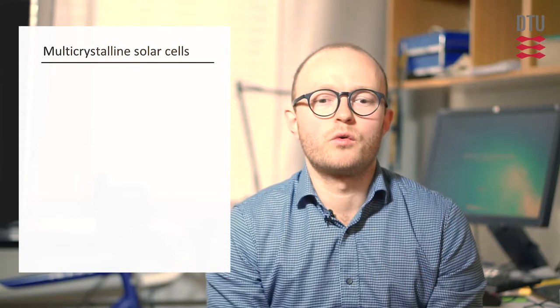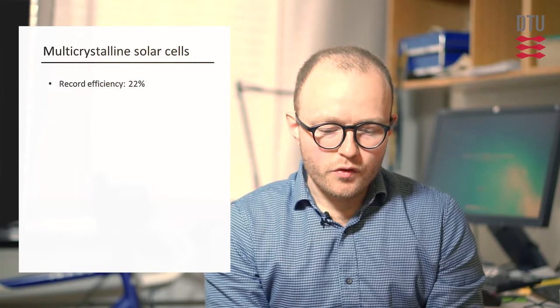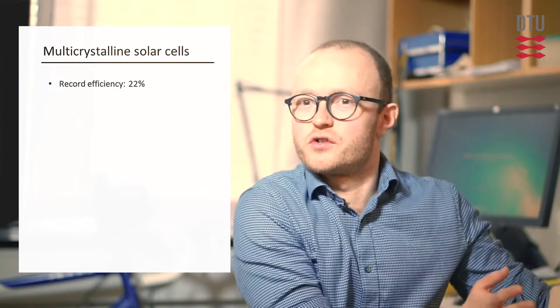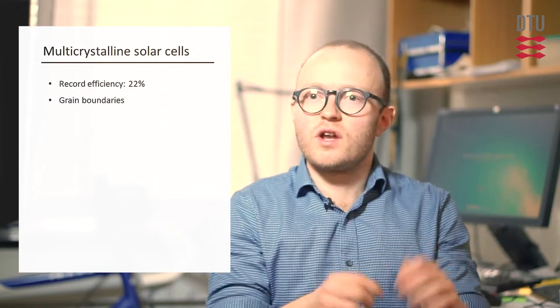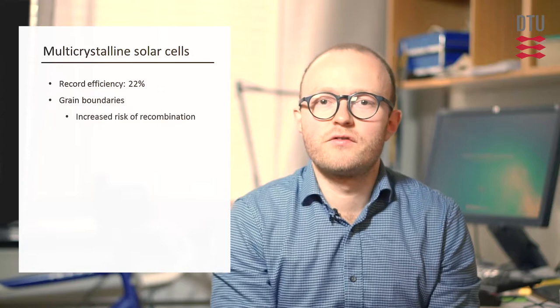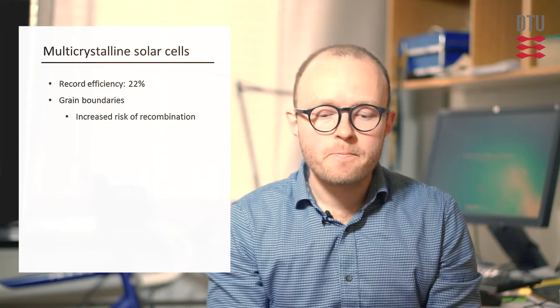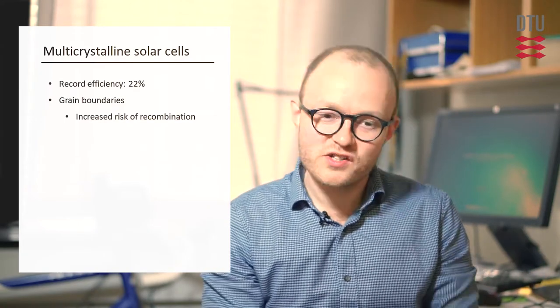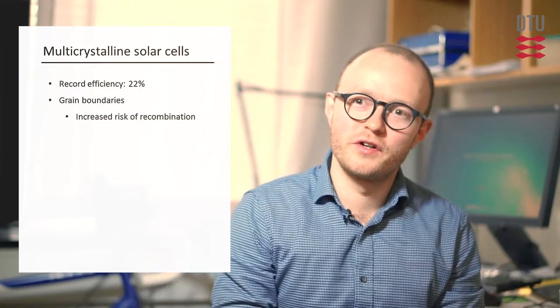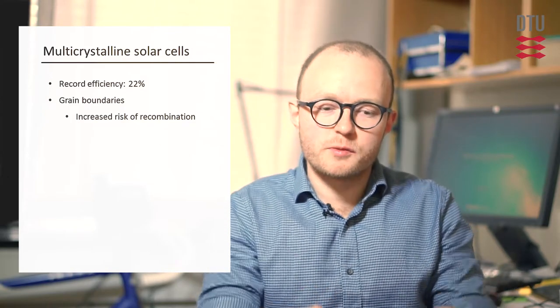When we look at multicrystalline cells that have a record around 22%, those cells, in addition to all the factors just mentioned for the monocrystalline, have the challenge of the grain boundaries. At the grain boundaries, we have an increased risk of recombination of the charge carriers. So these grain boundaries must be, well, preferably minimized in the production. But that's hard if you still want to keep the cheap production method of the multicrystalline wafers.